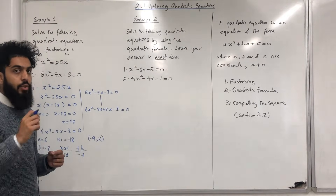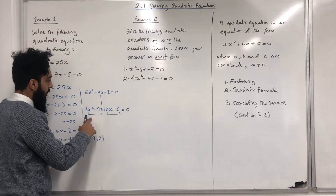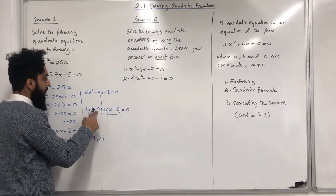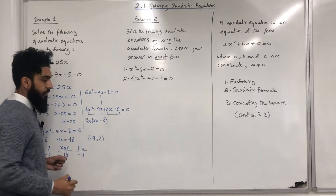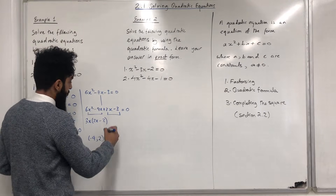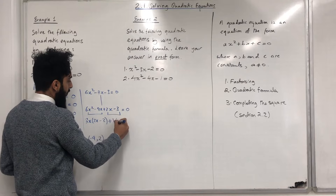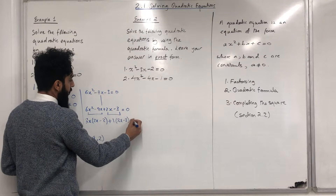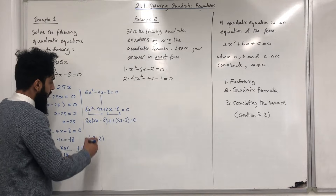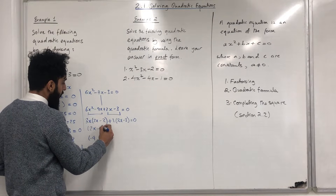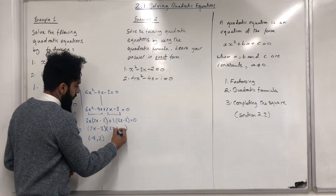The next step is to factorise two components. The first component: the highest common factor is 3X, giving 3X(2X - 3). The second component: the highest common factor is 1, giving 1(2X - 3) = 0. The common factor between these two terms is (2X - 3), so the factorised form is (2X - 3)(3X + 1) = 0.